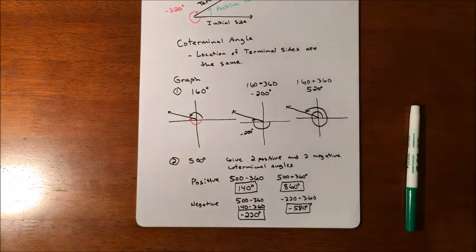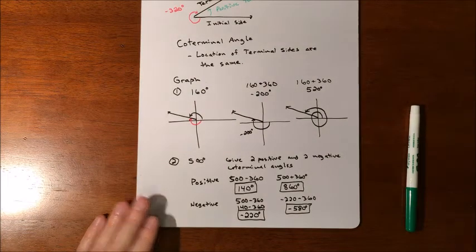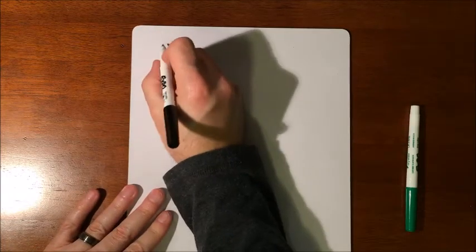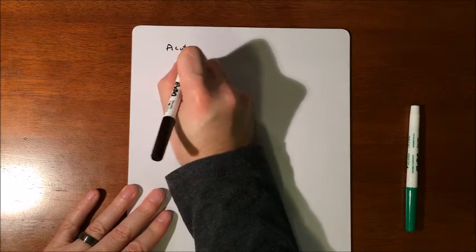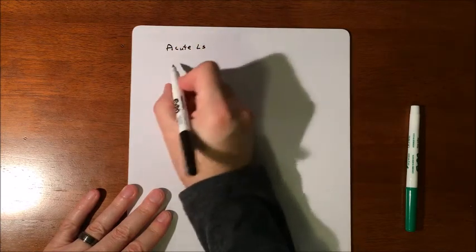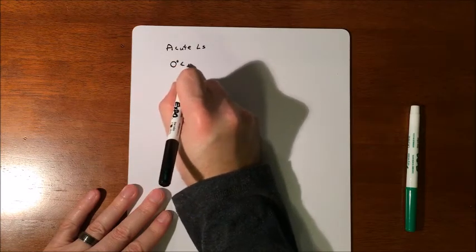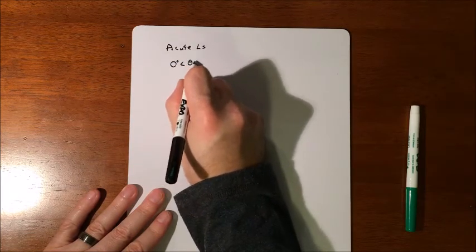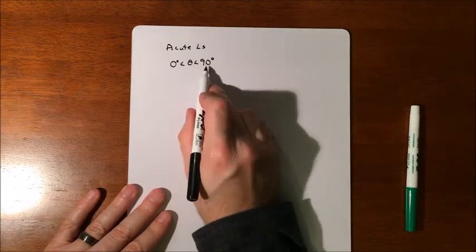And then the last piece of information is just a quick classification. So some terminology. So we have like acute angles. An acute angle is some sort of an angle between 0 and 90 degrees, not including the 0, not including the 90.